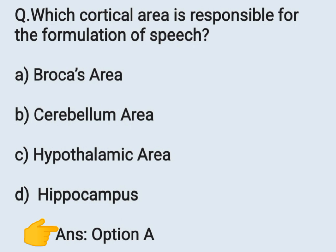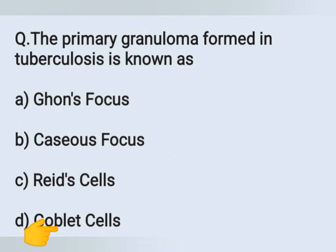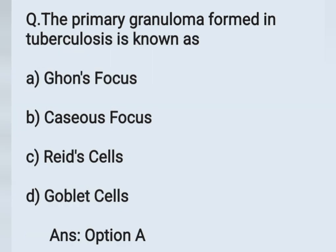The last question: The primary granuloma found in tuberculosis is known as — Option A: Ghon's focus, Option B: Caches focus, Option C: Aridus cells, Option D: goblet cells. The primary granuloma formed in tuberculosis is known as Ghon's focus. Option A is the correct answer.